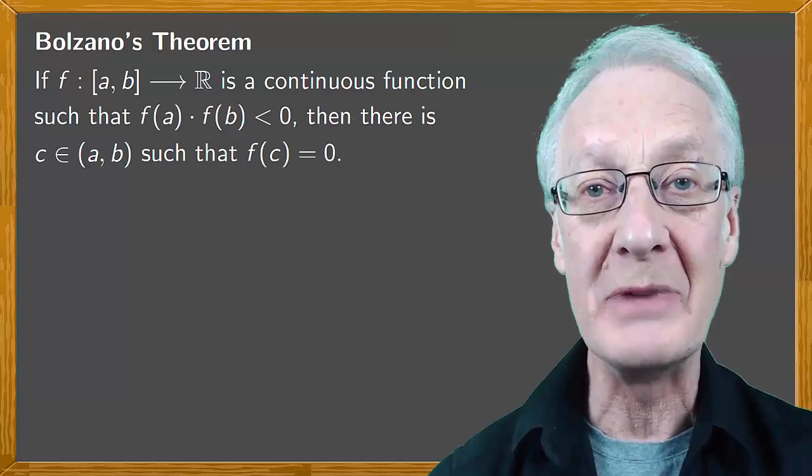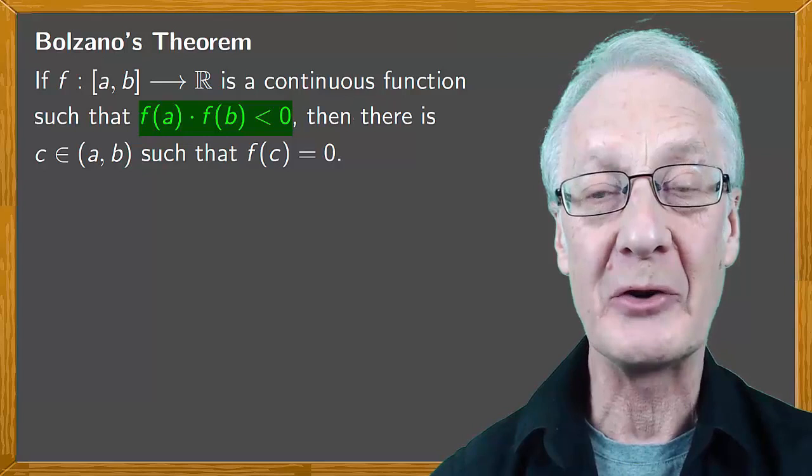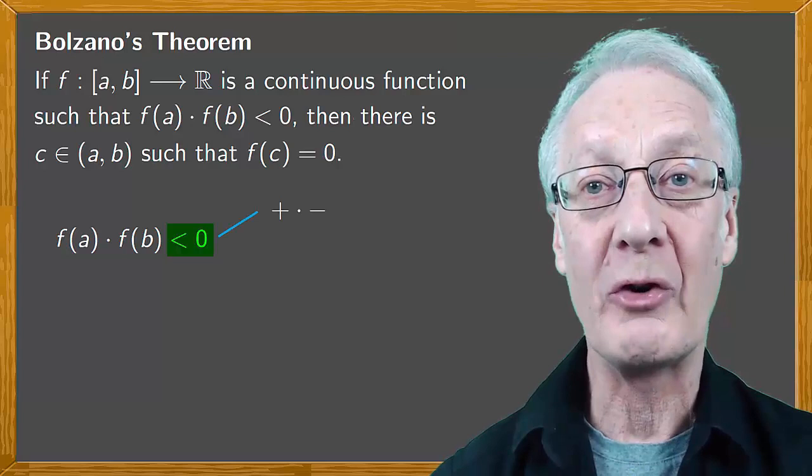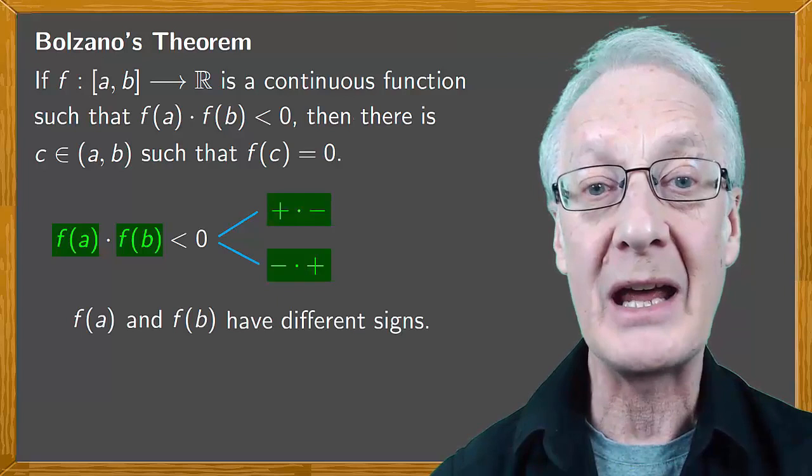What does it mean if f(a) · f(b) < 0? Remember that when multiplying signs plus times minus or minus times plus is negative. So if when we multiply f(a) times f(b) the result is negative, f(a) and f(b) must have different signs.